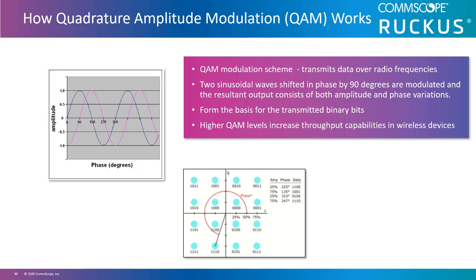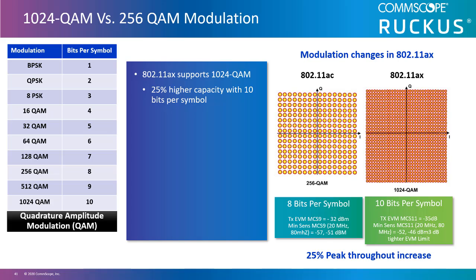Higher QAM levels increase throughput capabilities in wireless devices. The new Wi-Fi 6 or 802.11ax standard incorporates 1024 QAM, with each symbol encoding a larger number of data bits when using dense constellations. This translates to better throughput at the physical layer — 25% higher capacity with 10 bits per symbol versus 8 bits with 256 QAM. More bits equals more data, and payload delivery is more efficient like having a bigger truck. With billions of connected things expected within our networks, higher wireless throughput facilitated by 1024 QAM is crucial for quality of service in high-density locations such as stadiums, convention centers, transportation hubs, and auditoriums. Applications such as 4K video streaming are expected to drive internet traffic to 278 petabytes per month by 2021.